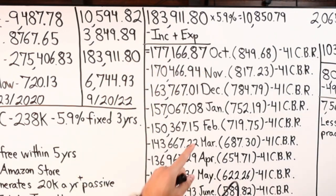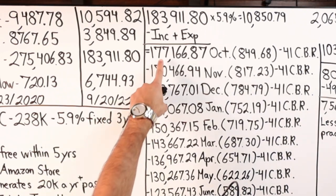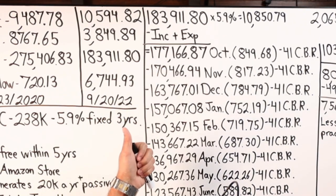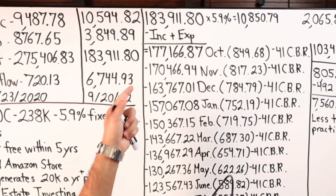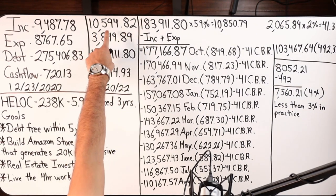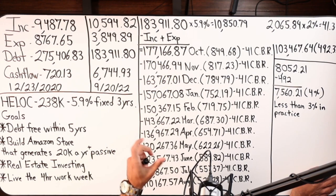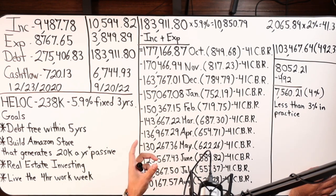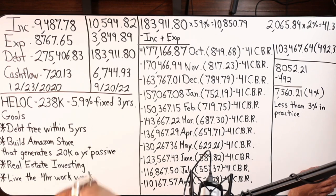That is assuming that for 15 days I owe $177,166.87 and for 15 days I owe $183k minus $10,594.82. That's not actually what's happening in velocity banking because this person does not get paid in one shot.